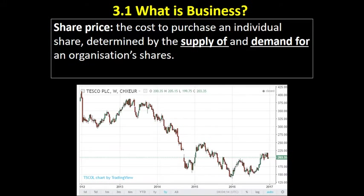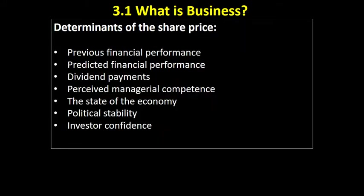The graphic shows that the share price of an organisation can go up and down — that's the share price of Tesco, which I'll come back to in a moment. The determinants of the share price are basically supply and demand, but we can look at what would lead to those factors changing. One thing would be the previous financial performance of a company. A company with a solid record of producing profits and creating value for shareholders through dividend payments is likely to be attractive to investors, pushing the share price up.